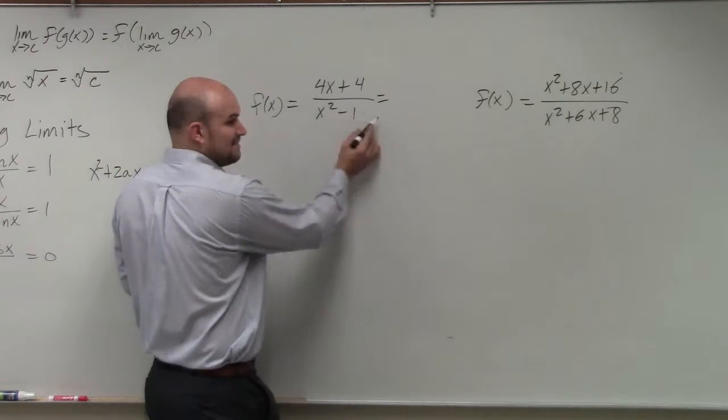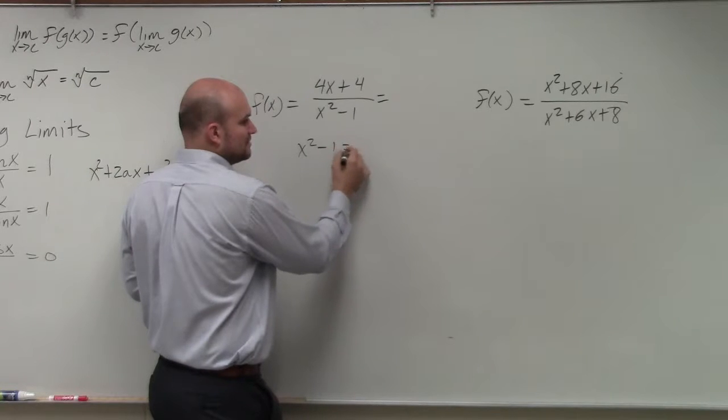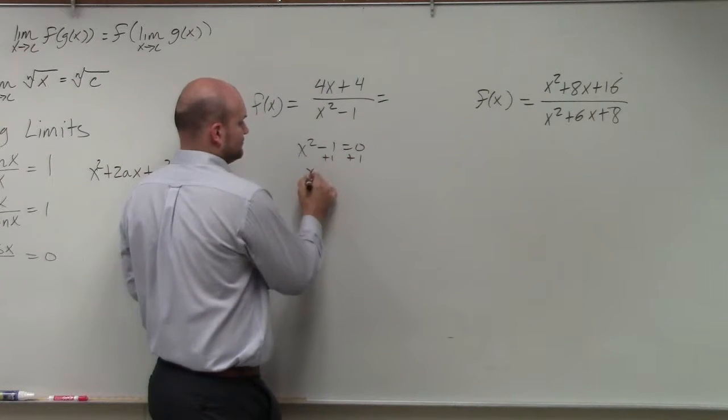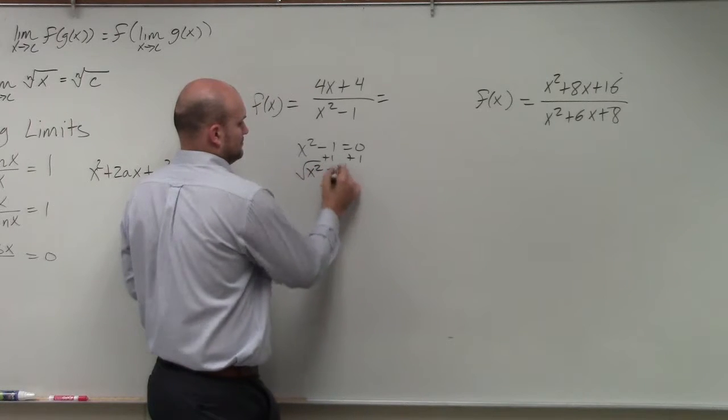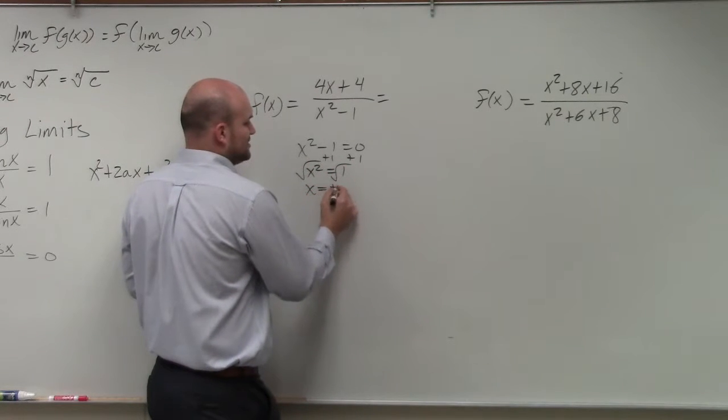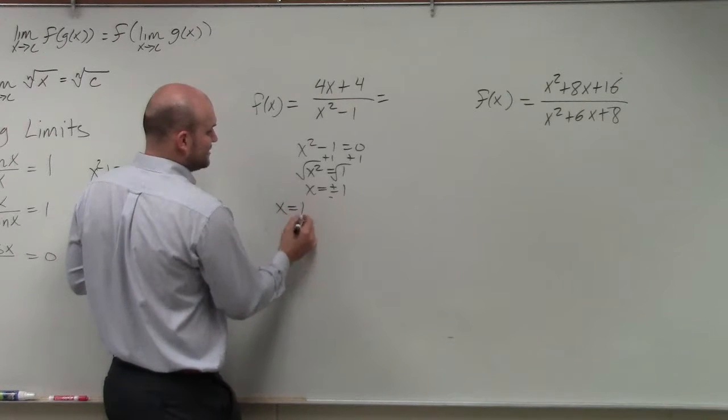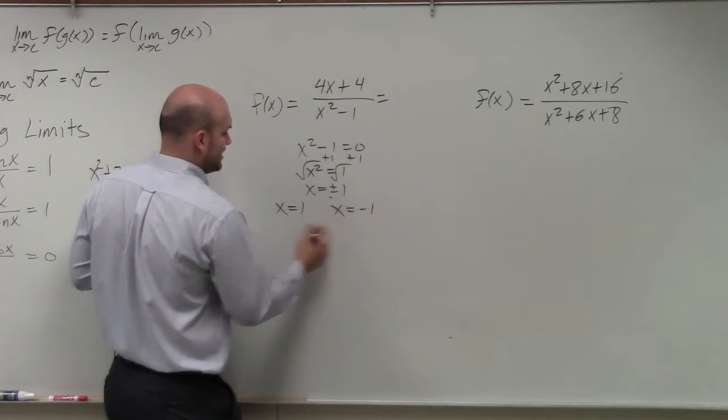So I set my denominator equal to zero. That's what we did before. Nothing has changed. We figure out x equals plus or minus 1. So I'm actually going to separate these out. So x equals 1 and x equals negative 1.